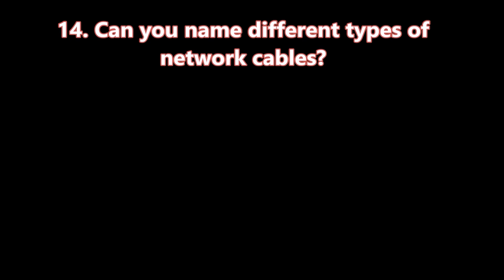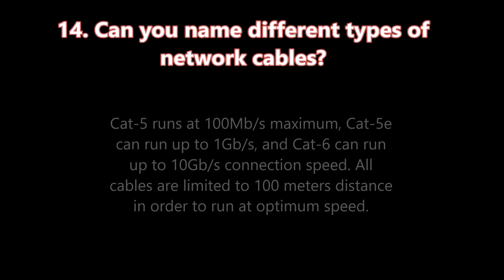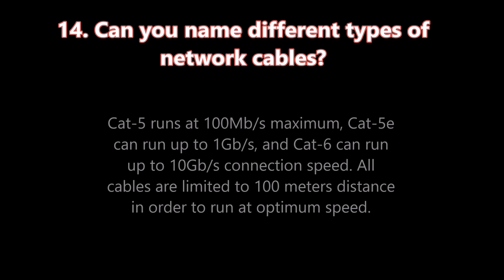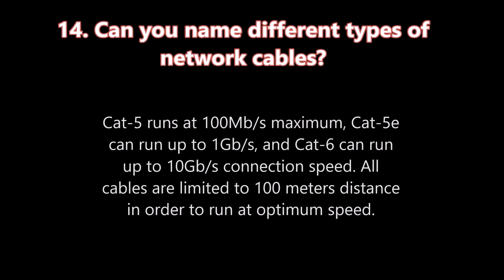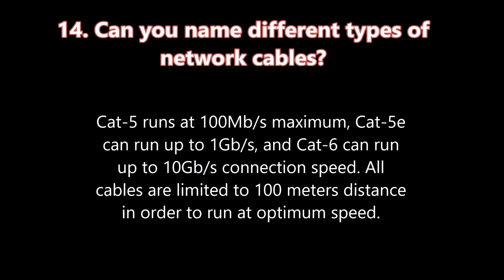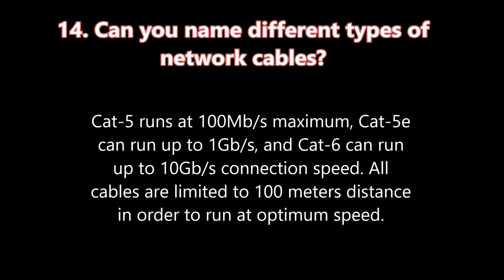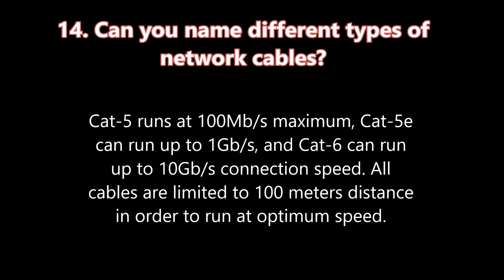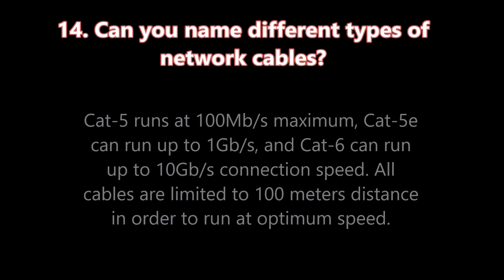Question number fourteen: Can you name different types of network cables? Cat 5 runs at 100 megabits per second maximum speed. Cat 5e can run up to 1 gigabit per second, and Cat 6 can run up to 10 gigabits per second connection speeds. All cables are limited to 100 meters distance in order to run at optimum speed.